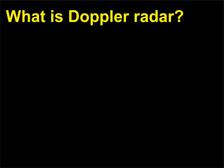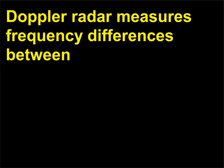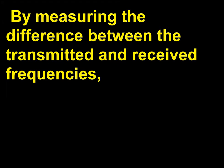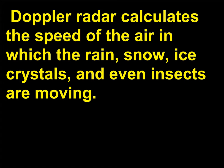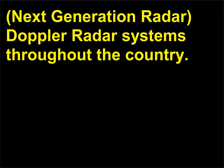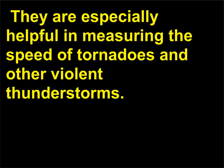What is Doppler radar? Doppler radar measures frequency differences between signals bouncing off objects moving away from or toward it. By measuring the difference between transmitted and received frequencies, Doppler radar calculates the speed of the air in which rain, snow, ice crystals, and even insects are moving. It can then be used to predict speed and direction of wind and amount of precipitation associated with a storm. The National Weather Service has installed a series of Nexrad (next-generation radar) Doppler radar systems throughout the country, especially helpful in measuring the speed of tornadoes and other violent thunderstorms.